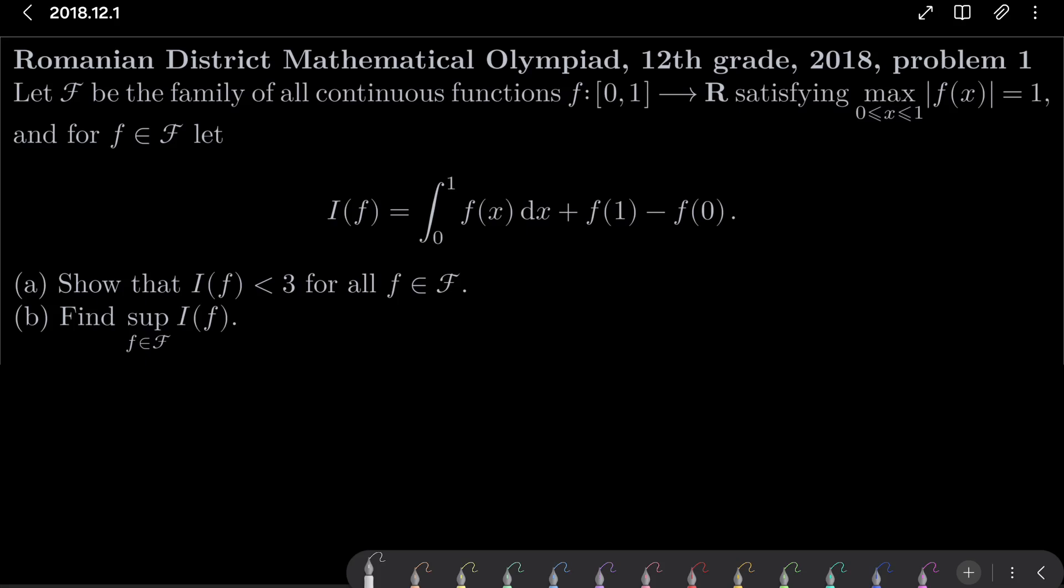Let F be the family of all continuous functions f from the compact interval [0,1] into the real numbers, satisfying that the maximum of the absolute value of our function is 1. For every element of this family we let I(f) be the integral from 0 to 1 of f dx plus f(1) minus f(0), and we wish to show two things.